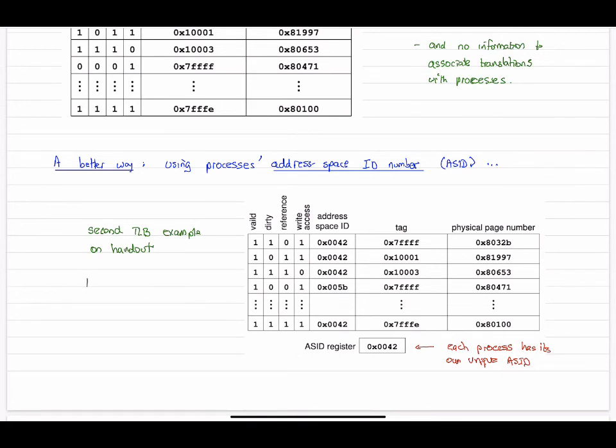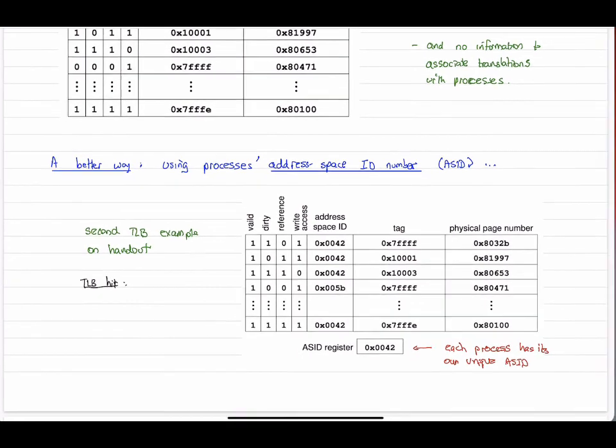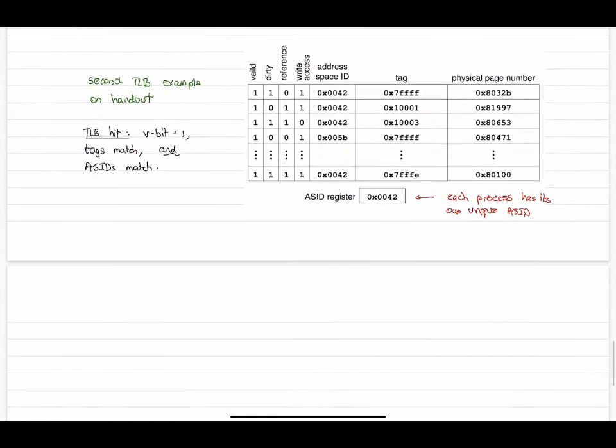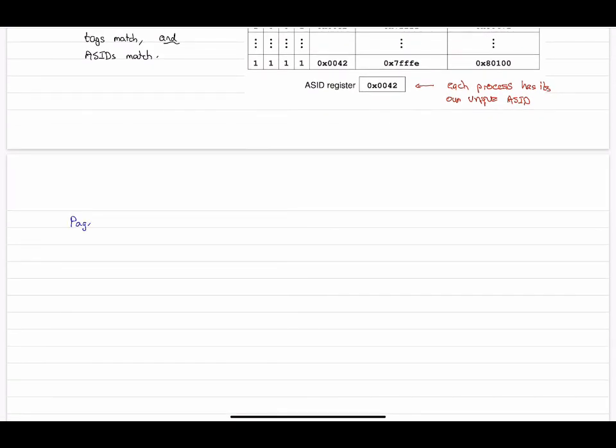That changes our hit and miss strategy a little bit. Now we have a hit when the usual tag matches and it has to be valid. But now we also match the address space ID for that translation. So if all three of those match, we have a hit. Otherwise, it's a miss. The nice thing about this latter approach is that address translations for multiple processes can coexist in the TLB. So it's not necessary to invalidate everything before restarting a process.